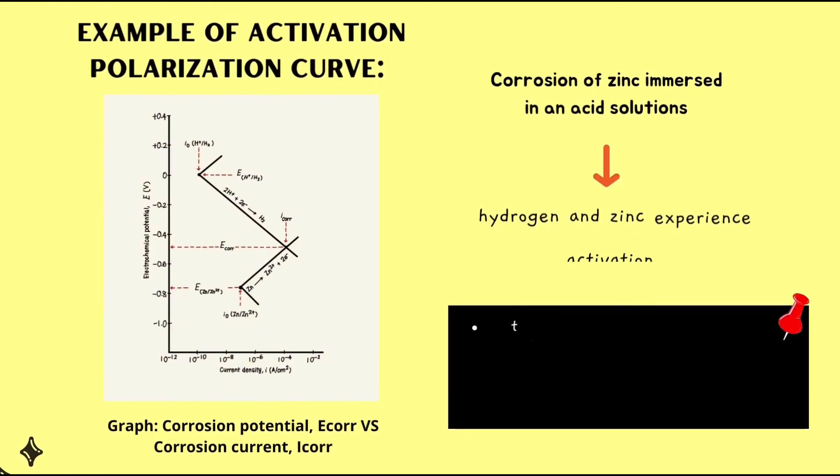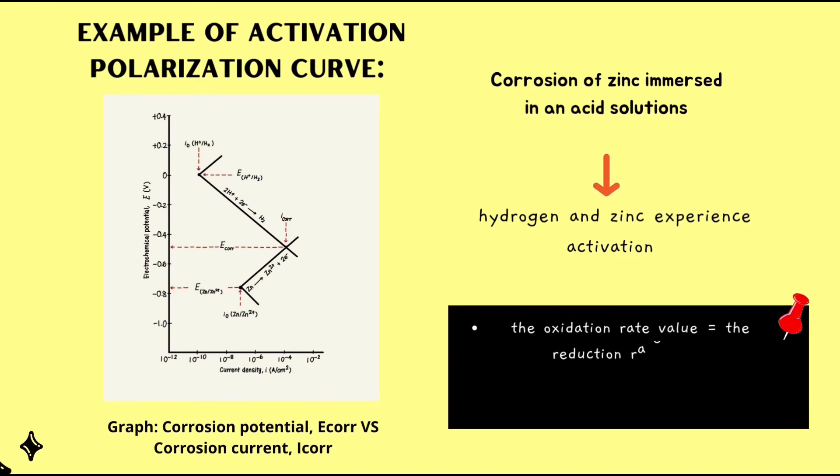For example, when corrosion of zinc is immersed in acid solutions. Hydrogen and zinc are activated along their respective lines after immersion. The oxidation and reduction rates must be the same, because they are only possible at the intersection of the two line segments. The corrosion potential and corrosion current will meet at this point. The corrosion rate is obtained by the intersection between total reduction rate and total oxidation rate.